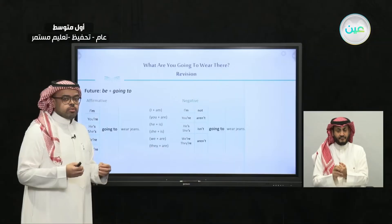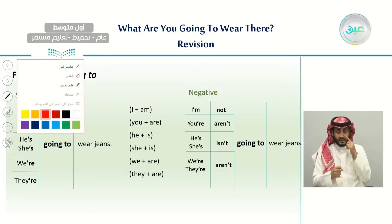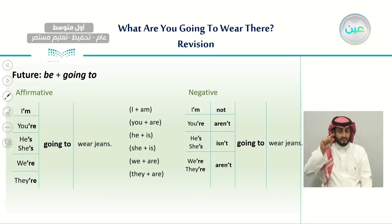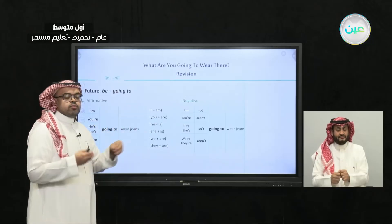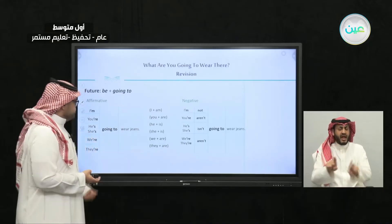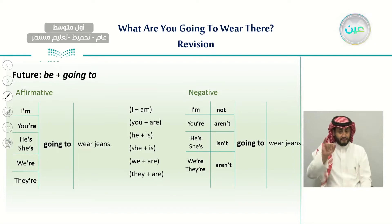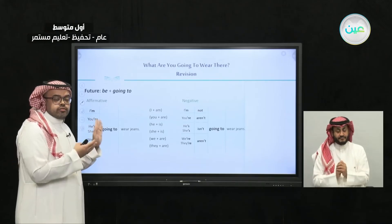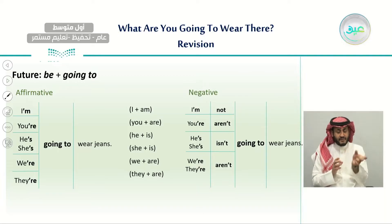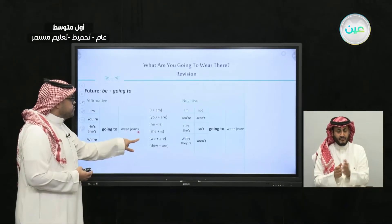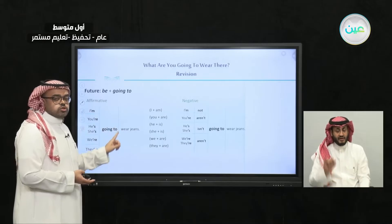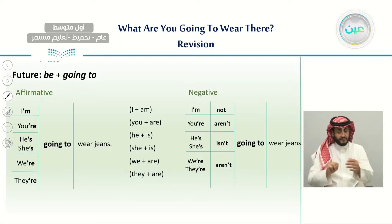Last lesson we talked about the grammar rule of using the future with 'going to.' If we want to talk about things we plan to do in the future, we use the phrase 'going to' with the verb to be. For example: I am, you/we/they are, or he/she is — going to. For example, 'I am going to wear jeans' means not right now, and not in the past.